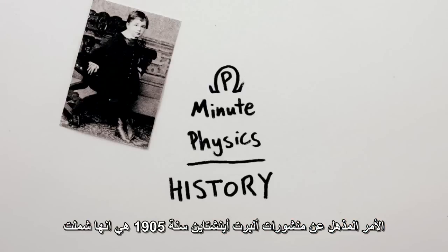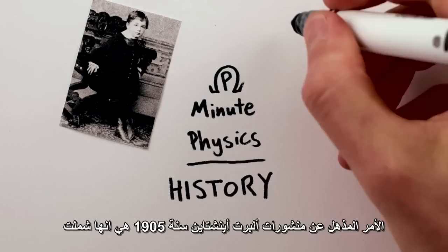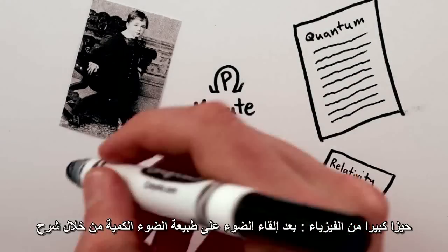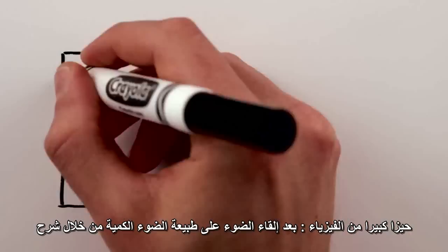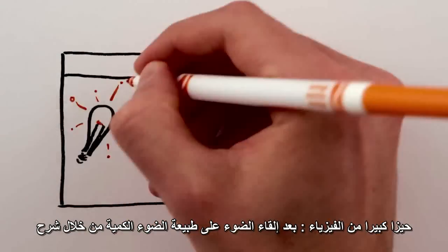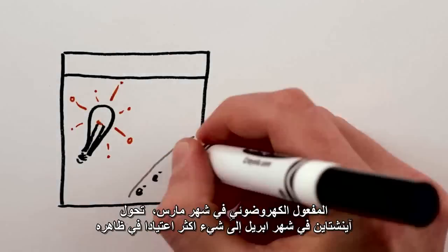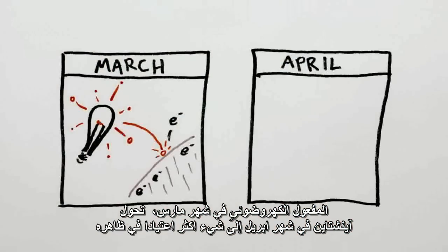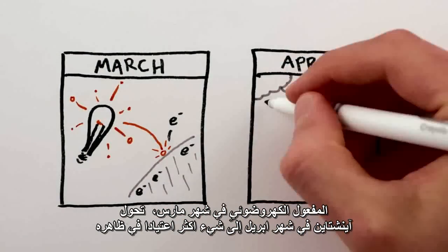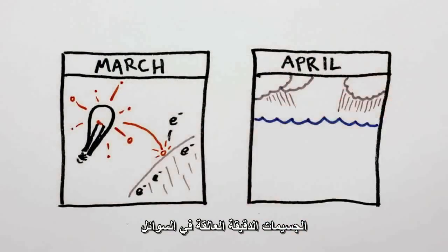One thing that's astounding about Einstein's publications in 1905 is that they spanned such a large range of physics. After illuminating the quantum nature of light by explaining the photoelectric effect in March, April saw Einstein turn to something apparently more mundane: particles suspended in fluids.